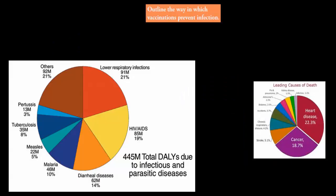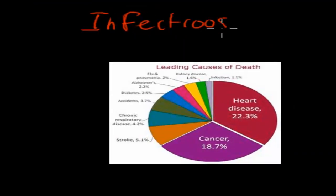About 100 years ago, pretty much most of our deaths came from infectious diseases. If you look at this pie diagram, it shows the deaths we have currently in terms of which are the most likely causes.